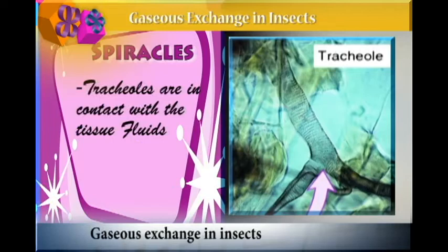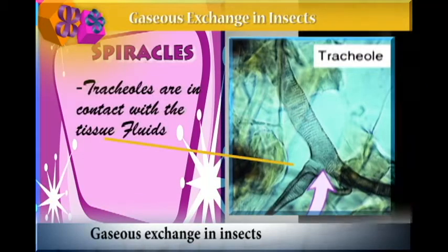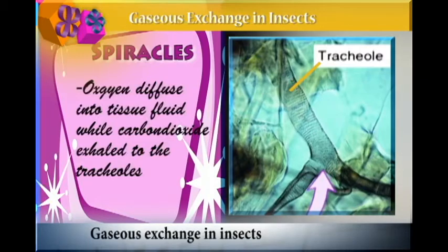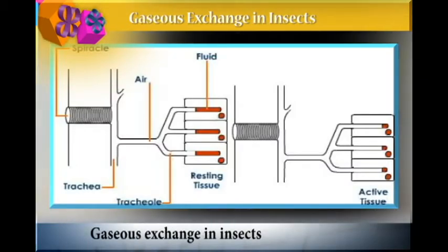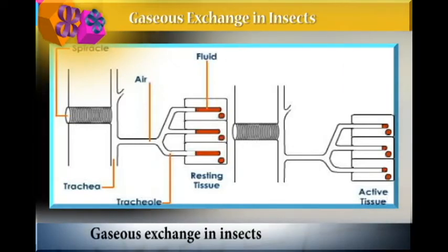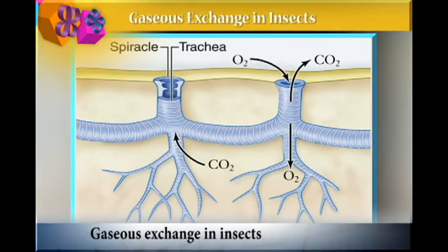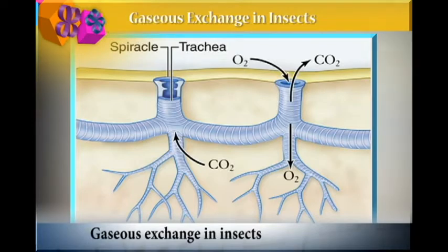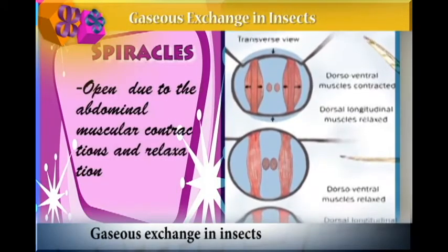Air enters the tracheoles and travels to the tissue fluids. Once oxygen reaches the tracheoles, it diffuses into the tissue fluids, while carbon dioxide is exhaled back into the tracheoles. This is the process by which gaseous exchange takes place in insects.